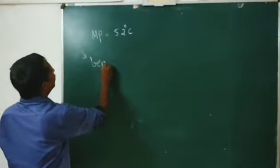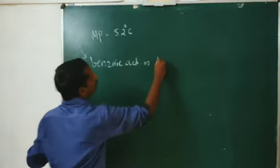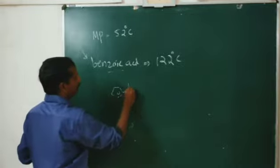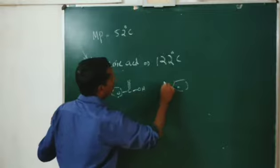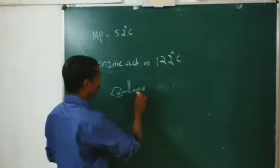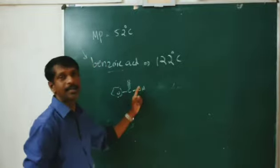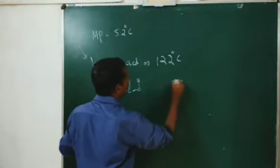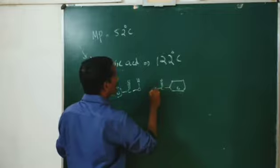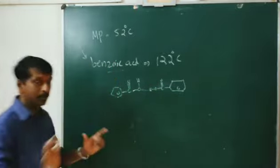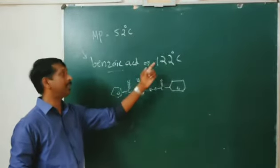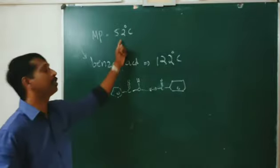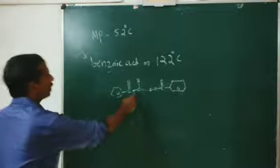By contrast, when you take benzoic acid, the melting point is raised to 122 degrees Celsius. This is because intermolecular hydrogen bonding is possible in benzoic acid — the OH of one molecule and the double bond oxygen of another molecule form intermolecular hydrogen bonding. That is why benzoic acid has a high melting point of 122 degrees Celsius, whereas benzene sulphonic acid's melting point is only 52 degrees Celsius because hydrogen bonding is not possible there.